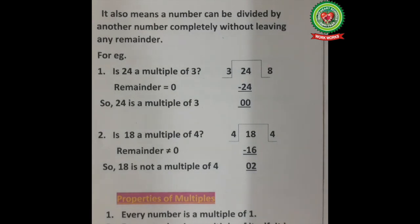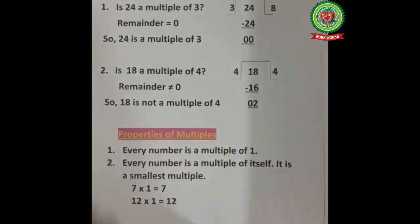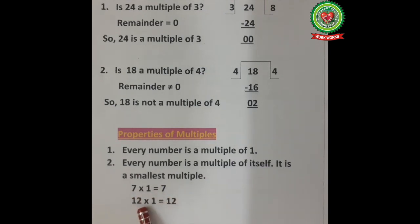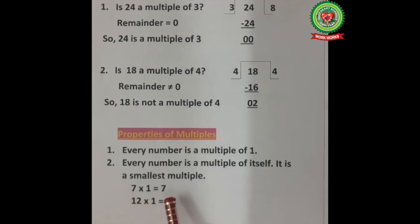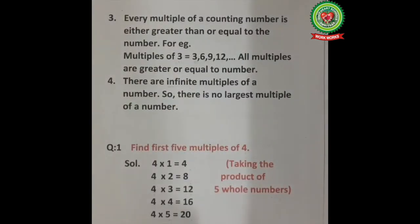I hope you understand the meaning of multiples. Now we will look at some properties of multiples. Property one: every number is a multiple of 1. Property two: every number is a multiple of itself — it is the smallest multiple. For example, 7 multiply 1 is equal to 7, and 12 multiply 1 is equal to 12, meaning 7 is a multiple of 7 and 12 is a multiple of 12.